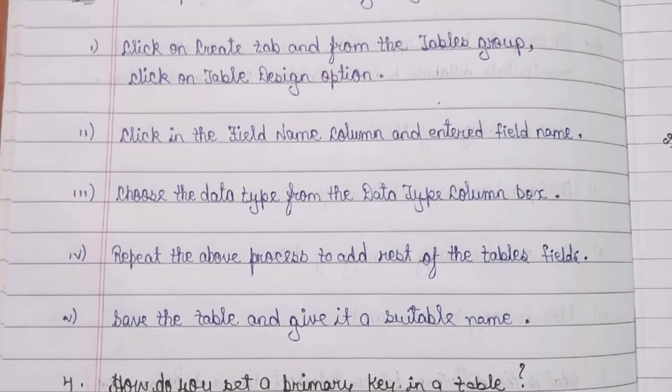Step 1: Click on Create tab and from the Table group click on Table Design option. Step 2: Click in the field name column and enter field name. Step 3: Choose the data type from the data type column box.